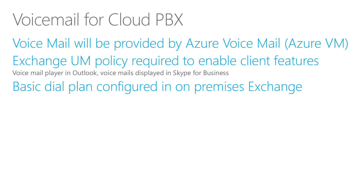Some Exchange Unified Messaging features are not available when using Azure Voicemail. Play on Phone — the ability to send a voicemail to a PSTN phone such as your cell phone — is not available. It will remain visible in the client if you have this policy defined, and if the end user clicks on it, they will get an error message, with some indication of a missing Unified Messaging component visible in logs.